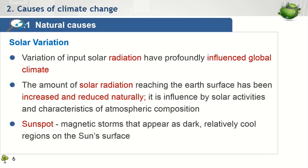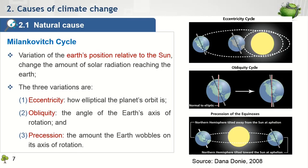Despite the variation caused by solar activity, significant variation in the amount of solar radiation striking the earth can also result from different earth positions relative to the sun. This variation is described as the Milankovitch cycle. Basically, there are three types of variations. The first variation is called eccentricity, which is the variation of the trajectory of the earth's orbit around the sun. This trajectory changes from a more circular route to a more elliptical one every 90,000 to 100,000 years. When the orbit is more circular, the amount of solar radiation the earth receives during a year differs by only about 6 percent. However, when it is elliptical, the variation is between 20 to 30 percent.